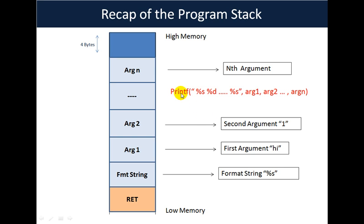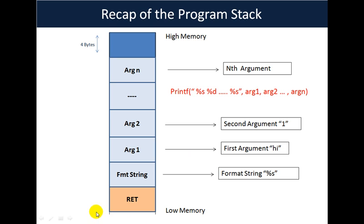Printf is a variadic function which can have a variable number of inputs, and those inputs are specified using the format string. Let's say there is a format string containing a description of n different data types — '%s %d' and so on until '%s' — and then you mention n arguments arg1 to argn. For such an invocation, once printf is called, you're going to have the return address back to the caller of printf.